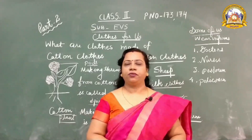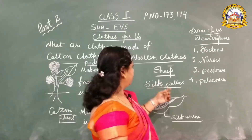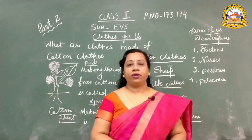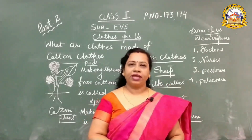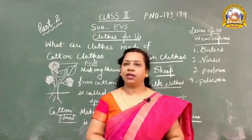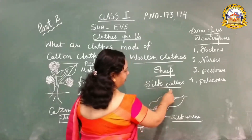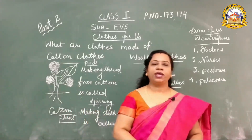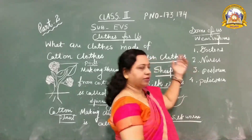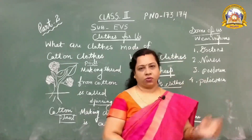The thick hair from the sheep is cleaned and then used for making wool. So sheep give us woolen clothes for winter. We also wear silk clothes. We get silk from a worm known as the silkworm. Silk is used to make sarees, scarves, and many other things.